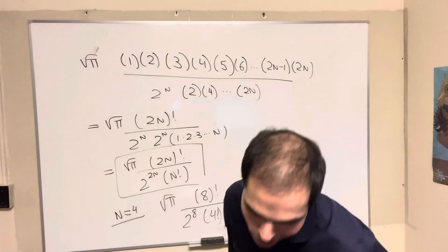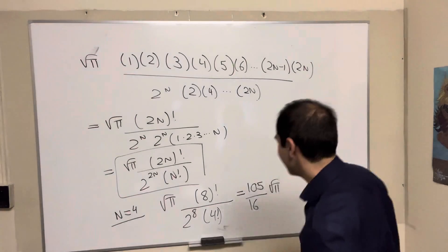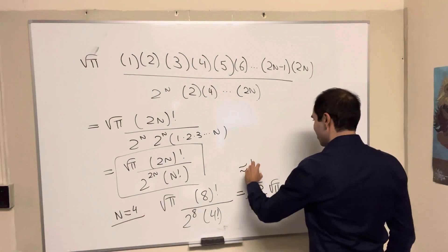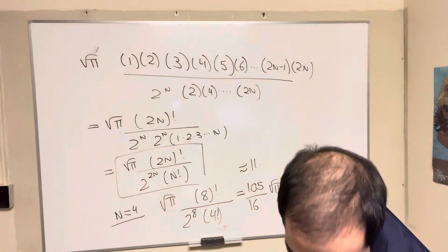you get 105 over 16 square root of pi, which is, well, not roughly, I guess you can calculate this exactly, but I think roughly 11.63.